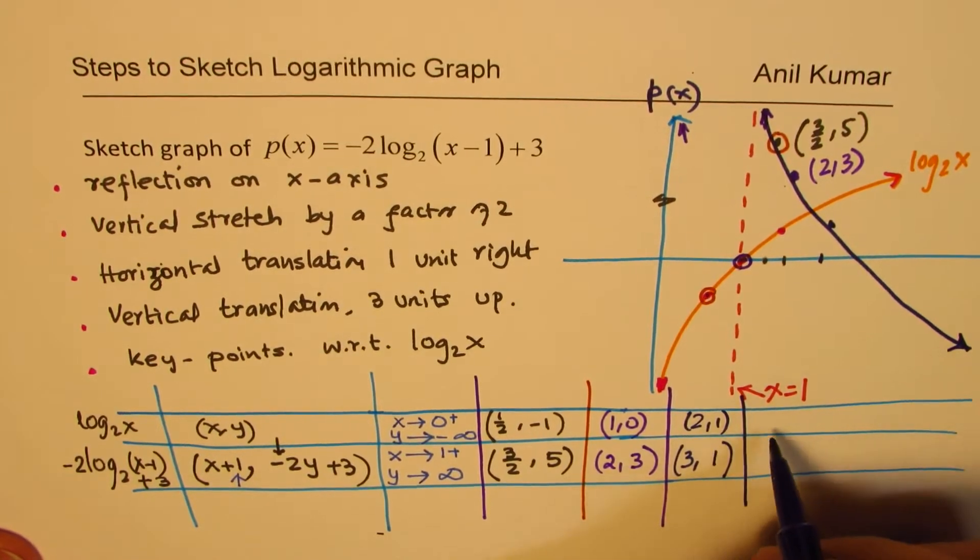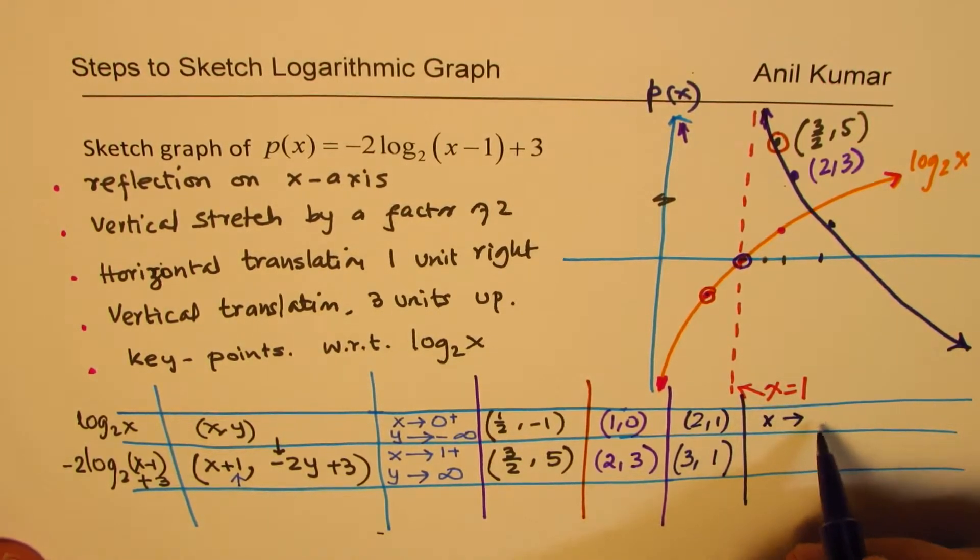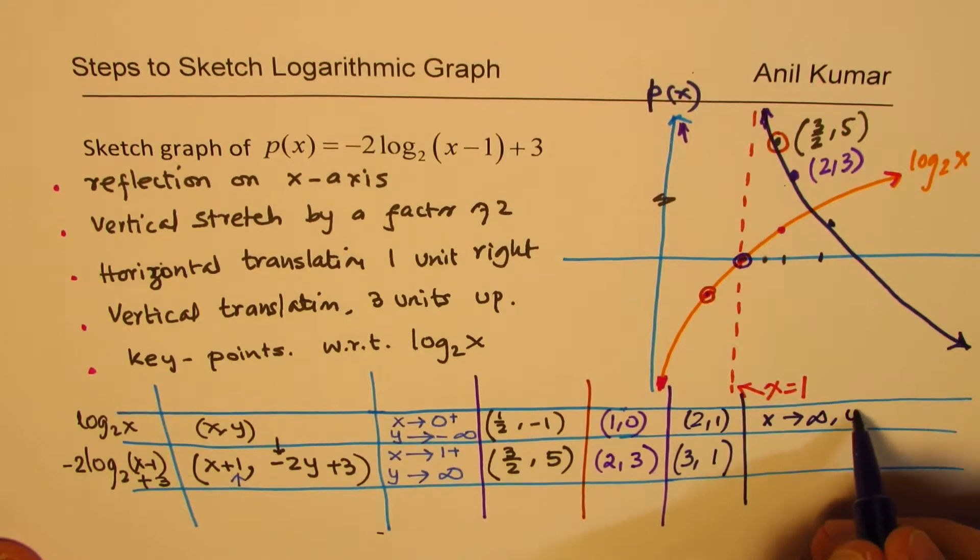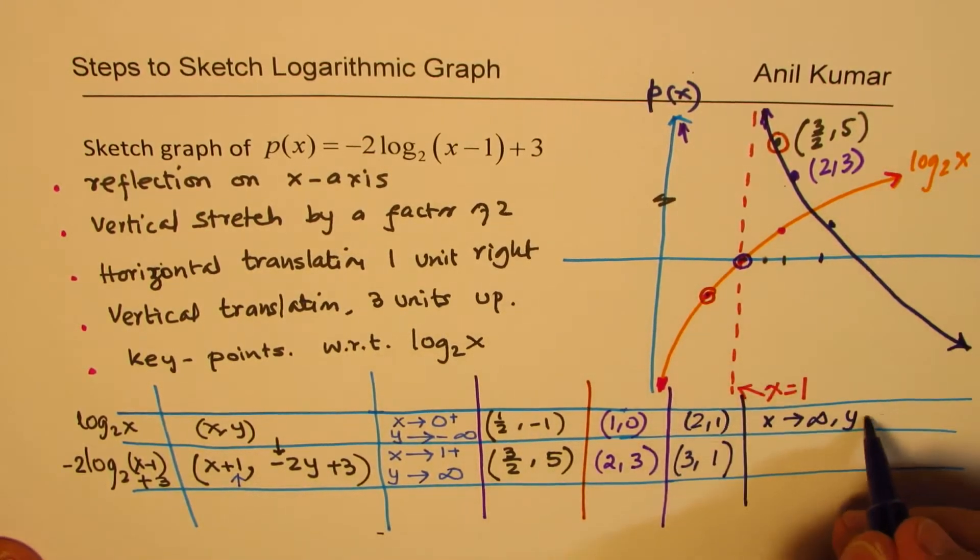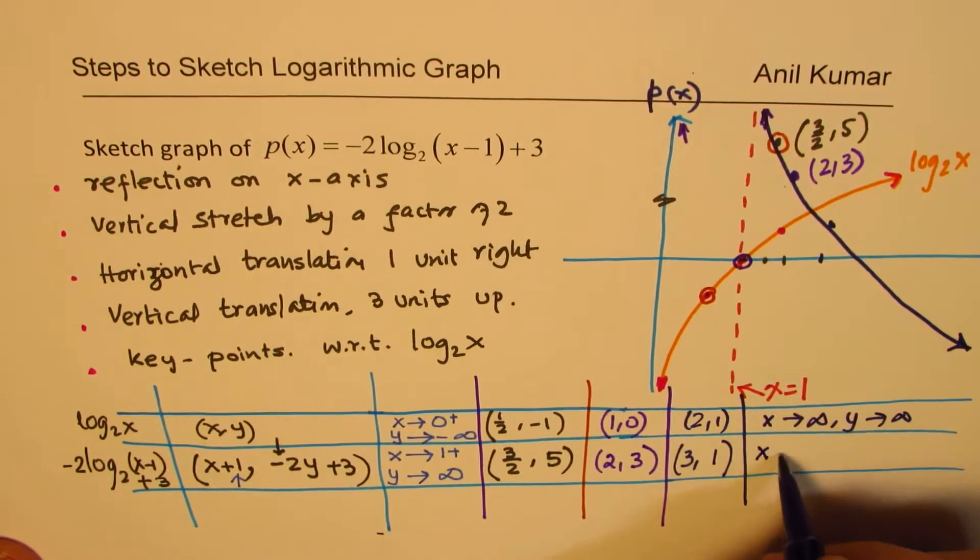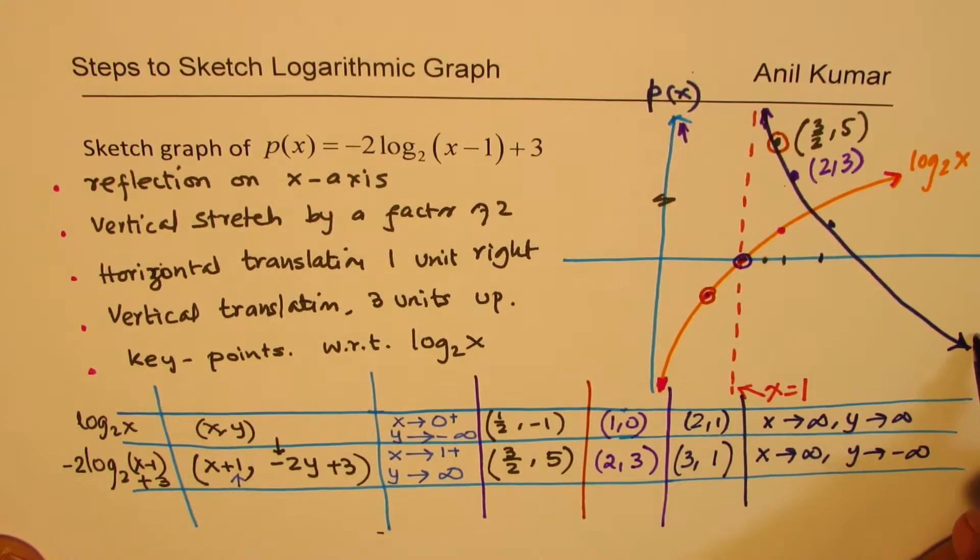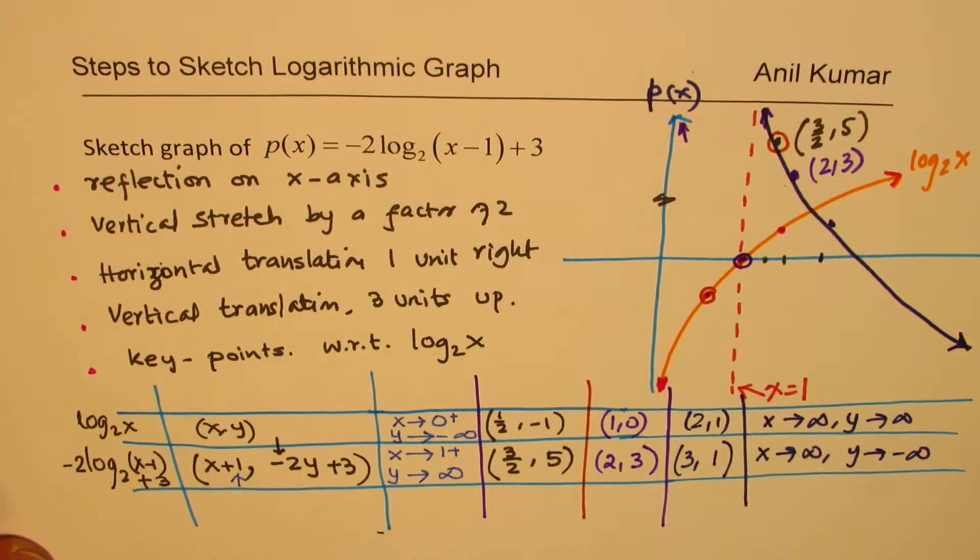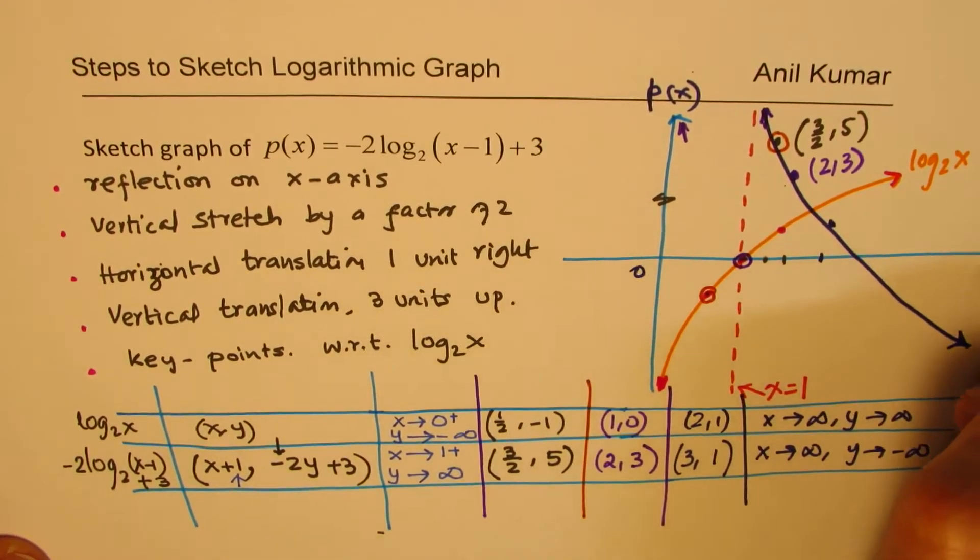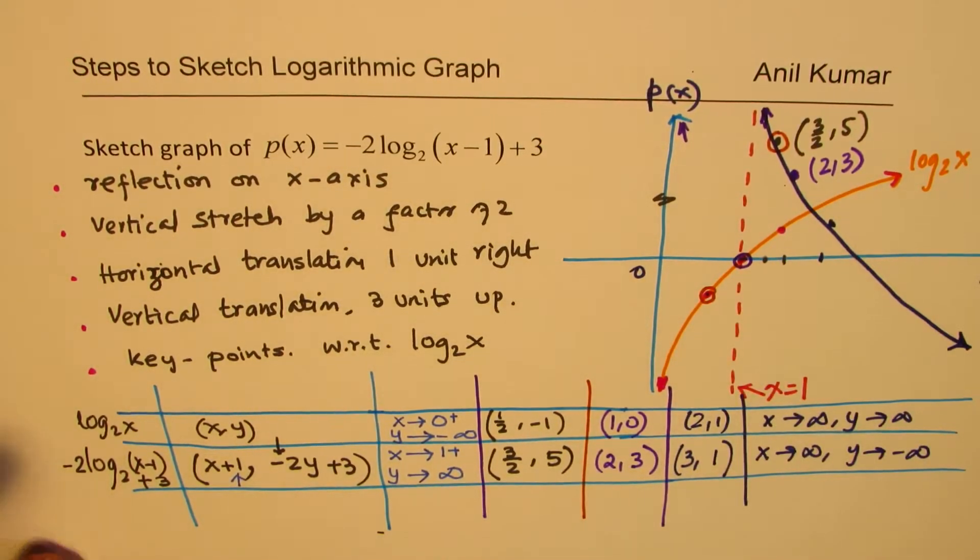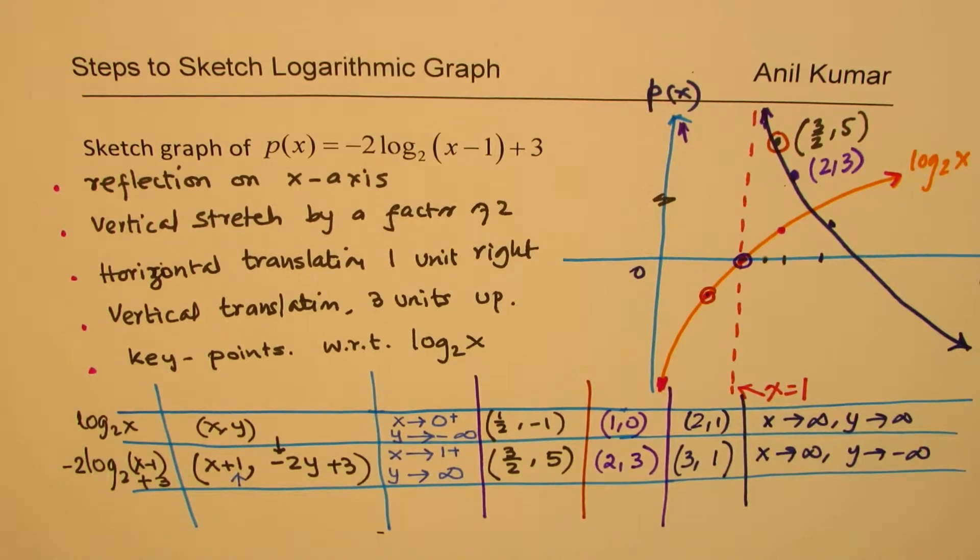Does it make sense to you? So you can see that when x is approaching infinity, y was earlier approaching positive infinity, but now when x is approaching infinity, y approaches negative infinity. So that becomes the end behavior. So that is how we'll get the graph of our transform function now.